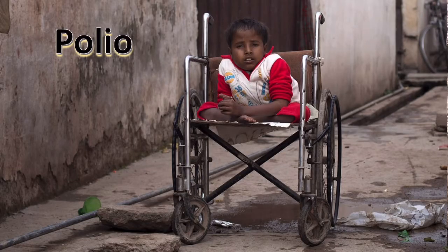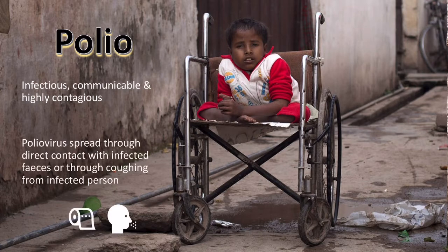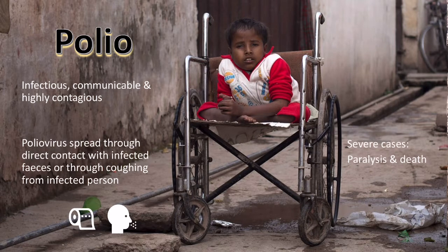Polio is a highly infectious, communicable and contagious disease. People contract it through contact with infectious feces, and then spread it through coughing or sneezing — water droplets infecting others. When people get it, the consequences are severe: muscle stiffness, and at the worst end, paralysis and unfortunately death.